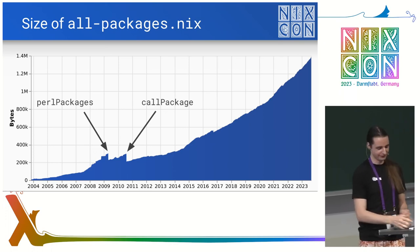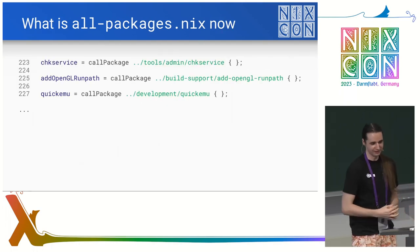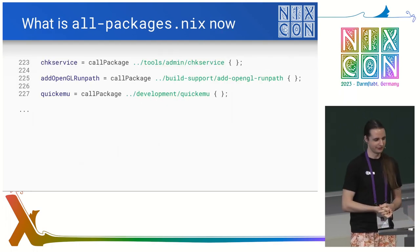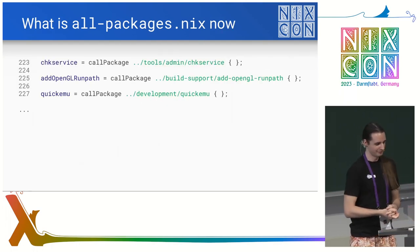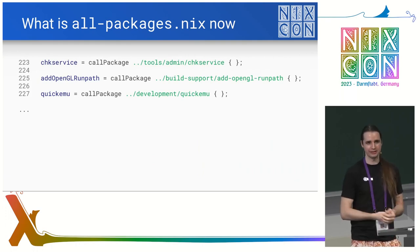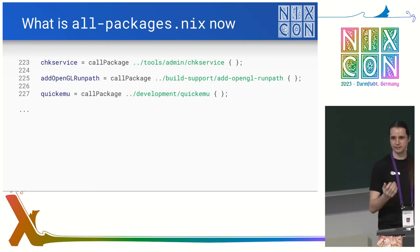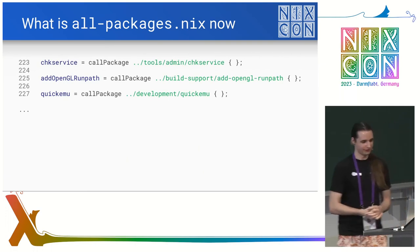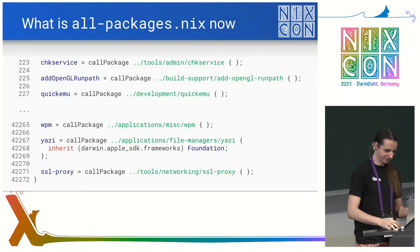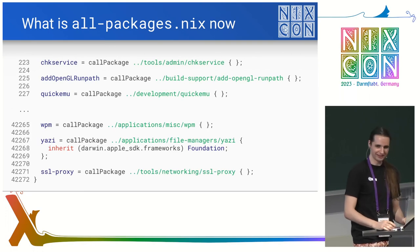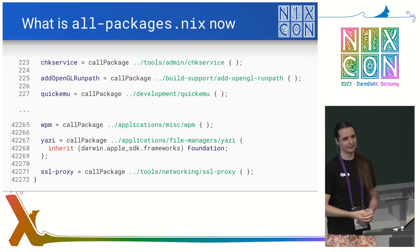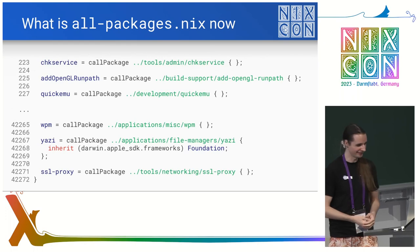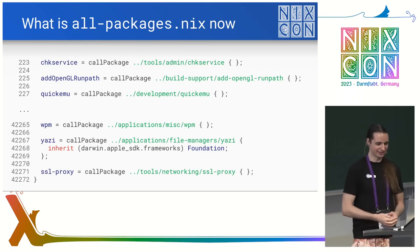What does all-packages.nix look like today? This is the start, and as you can see, call-package has proven itself to be useful — each definition is just a single line now. But if we scroll to the bottom, we realize it's about 40,000 lines. So that's gotten a bit out of hand.